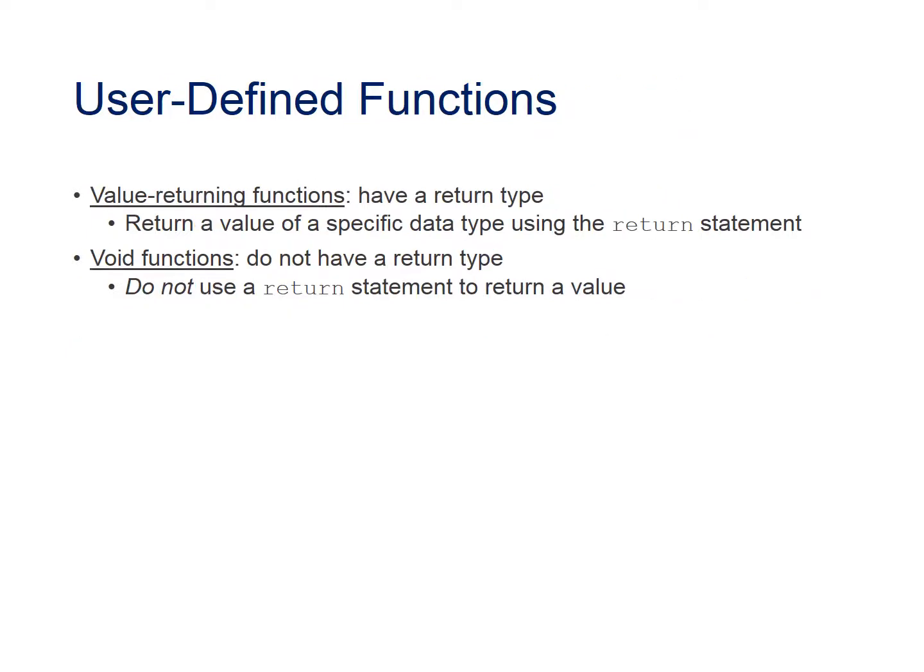User-Defined Functions. There are two types of user-defined functions: value-returning functions, which have a return type and return a value of a specific data type using the return statement, and void functions, which do not have a return type and do not use a return statement to return a value.